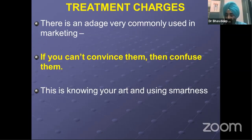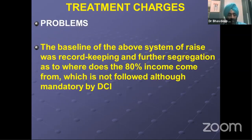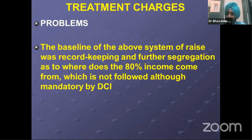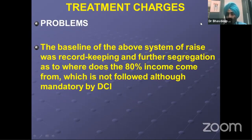There is a very old adage in marketing: if you can't convince them, confuse them. Obviously it doesn't mean literally confuse them — it's about applying smartness in your trade. This is knowing your art and knowing your numbers pretty well. So what are the assumptions in this system? The baseline is record keeping: you have to gather data from your records to segregate where those 80% and 20% figures come from. It is actually mandatory by the DCI to maintain your records since the revised guidelines came in 2014. Still many colleagues are not indulging in that.